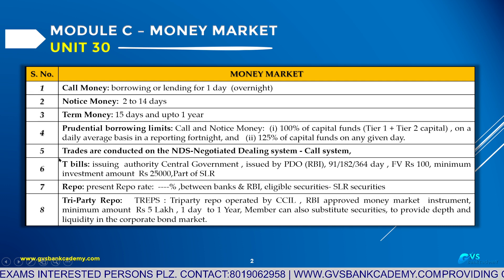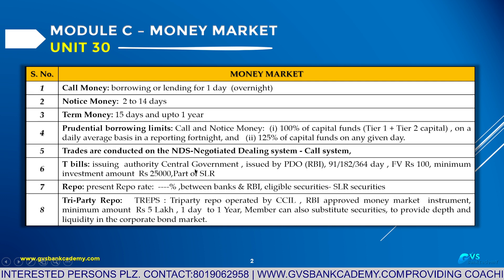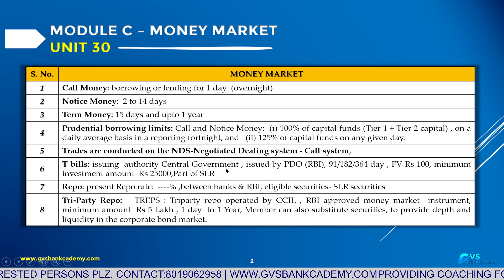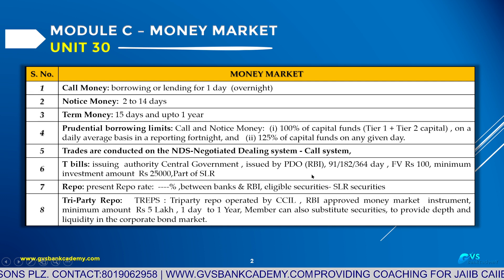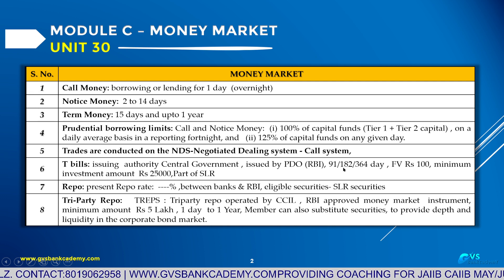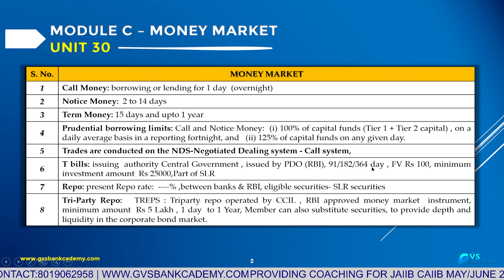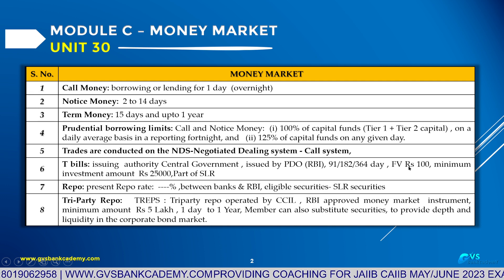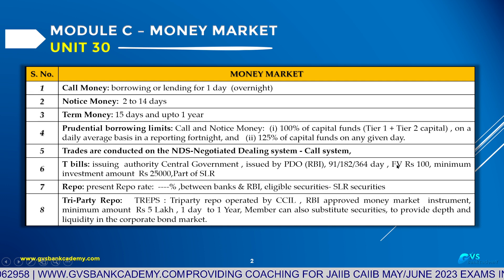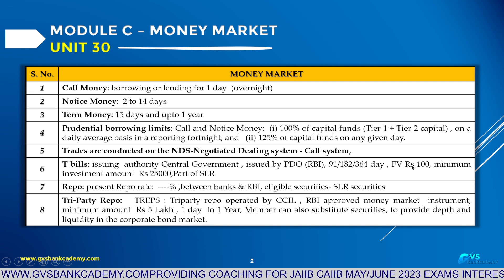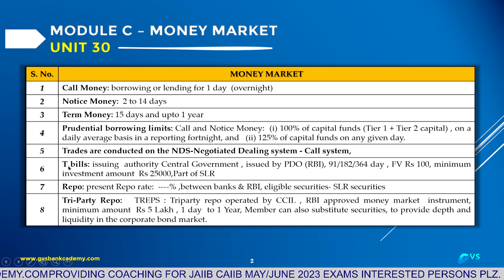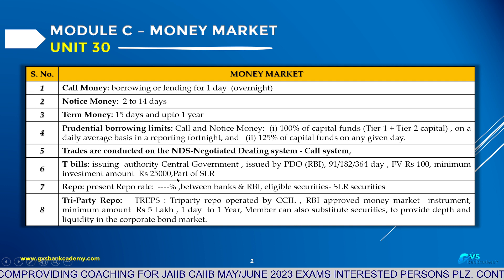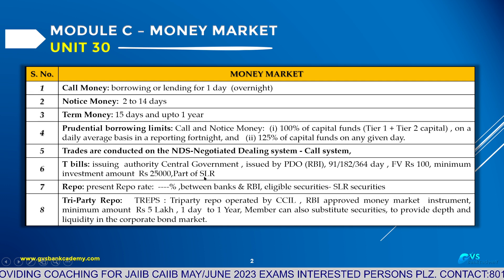Treasury bills are issued by the Public Debt Office of RBI on behalf of the Government of India to meet short-term funding mismatches. The durations are 91 days, 182 days, and 364 days. Treasury bills have a face value of ₹100 and are issued at a discount; on maturity, the face value is paid. The minimum investment amount is ₹25,000. For scheduled banks, treasury bills are part of Statutory Liquidity Ratio (SLR) securities.